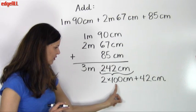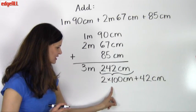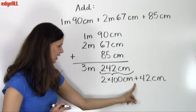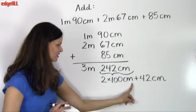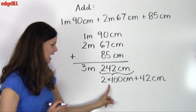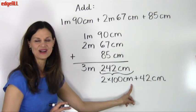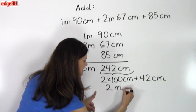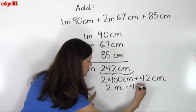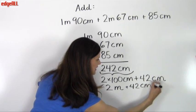Well I know that 100 centimeters equals a meter. And so instead of saying 2 times 100 centimeters, I can say 2 times 1 meter or 2 meters plus still the 42 centimeters that I have here.